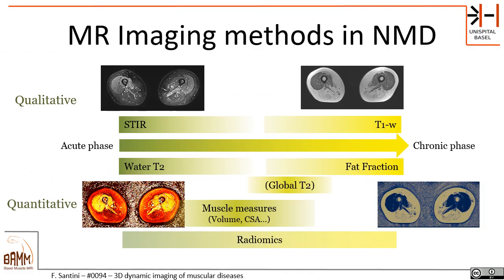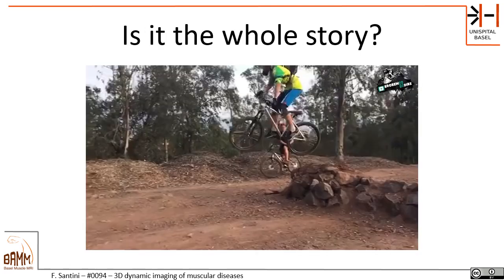MR imaging is widely used in neuromuscular diseases and its applications range from a number of qualitative and quantitative methods, mostly focused on identifying fat fraction, edema, and other muscle characteristics. But is it the whole story?